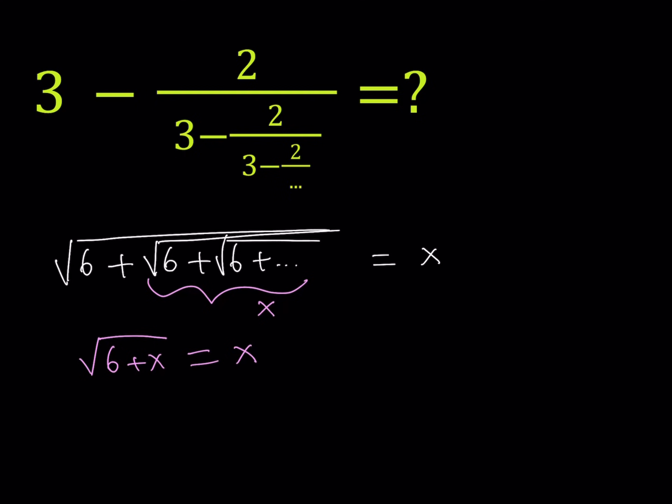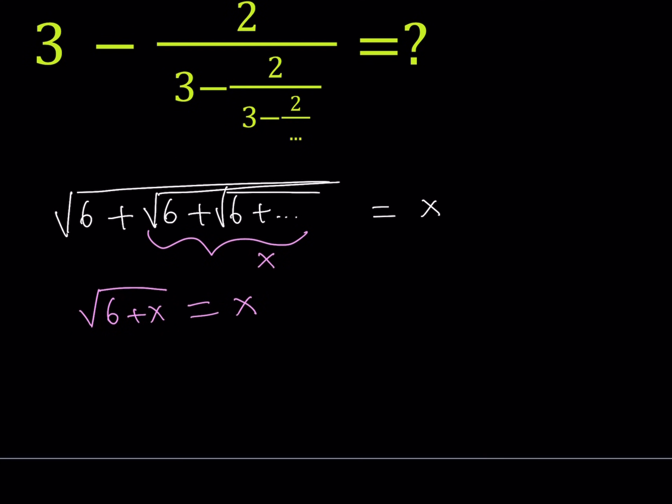The square root of 6 plus x equals x. And then, what would you do to solve for x? This is a radical equation, but I want to solve for x. So I would square both sides. That would give me 6 plus x equals x squared. And then you would put everything on the same side: x squared minus x minus 6 equals 0.